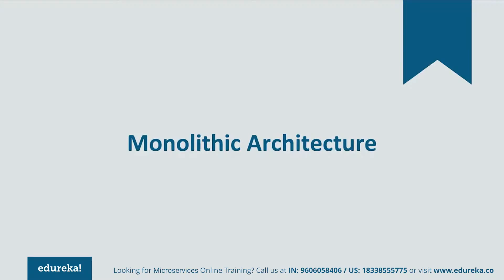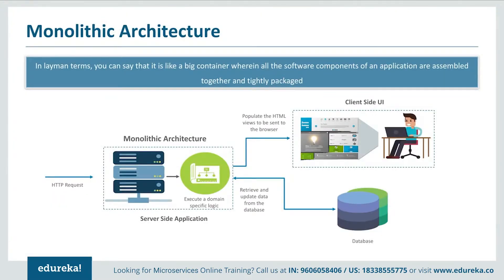What do you think monolithic architecture was? It was like a big container where all the software components of an application were tightly packed together. Let's look at the client-server model. As a user, when you open a web UI, you just see a website. But behind the scenes, the server side application has different features — handling HTTP requests, retrieving and updating data from a database, executing domain-specific logic — all put on a single framework. So if any one feature had not worked, the complete system would go down.